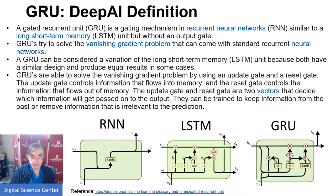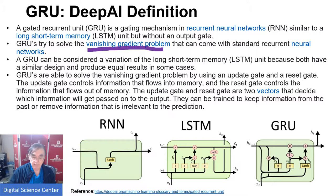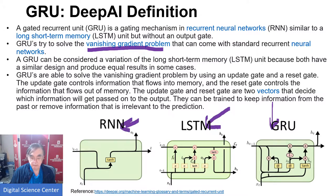A lot of the reason LSTMs and GRUs are used is to solve vanishing gradient problems, which we mentioned before. Because they remember things over longer distances than RNNs, they have less problem with vanishing derivatives, as information is transferred further. LSTMs are the most complex, then GRUs, then simple RNNs. LSTMs are mainly used, then GRUs, then RNNs.